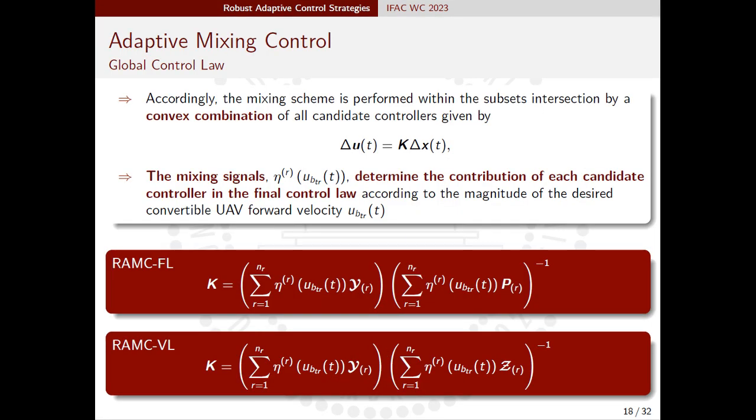The mixing of candidate controllers is performed within the intersection of the adaptive mixing sets by a convex combination of the candidate controllers. The mixing signals determine the contribution of each candidate controller in the final control law according to the desired magnitude of the forward velocity.